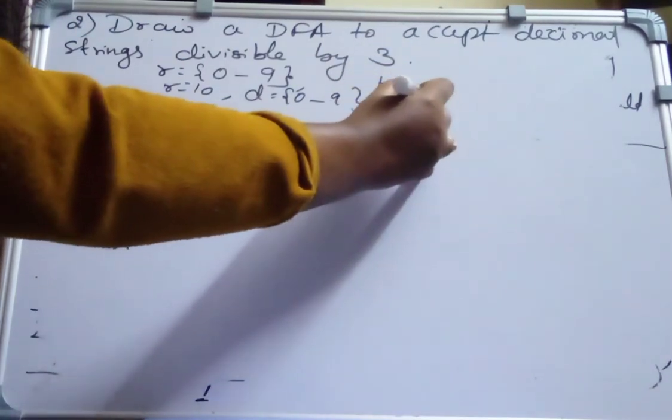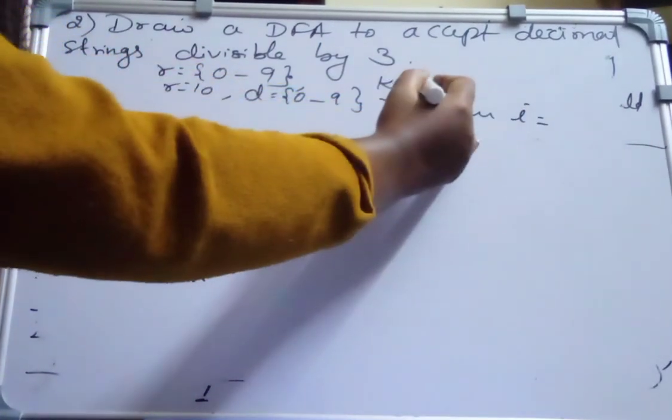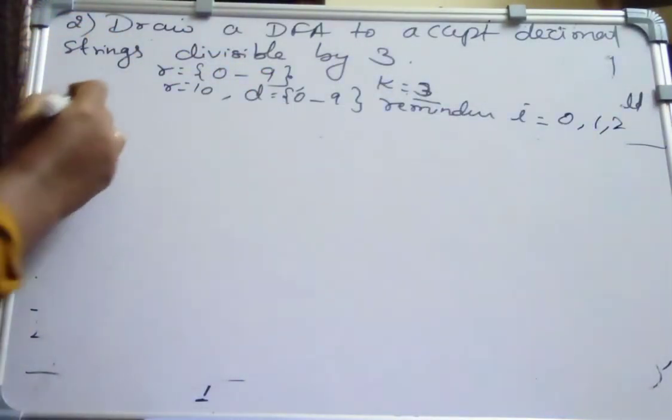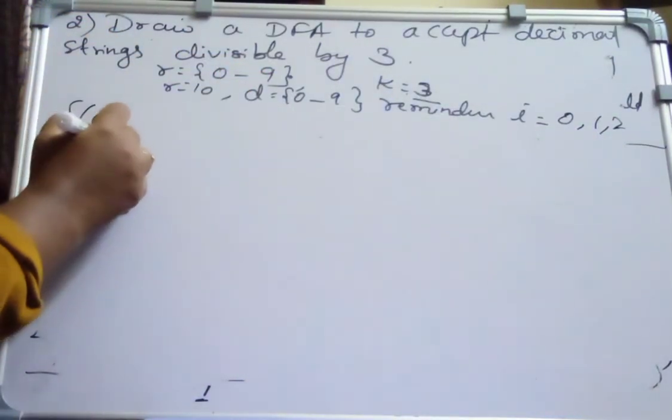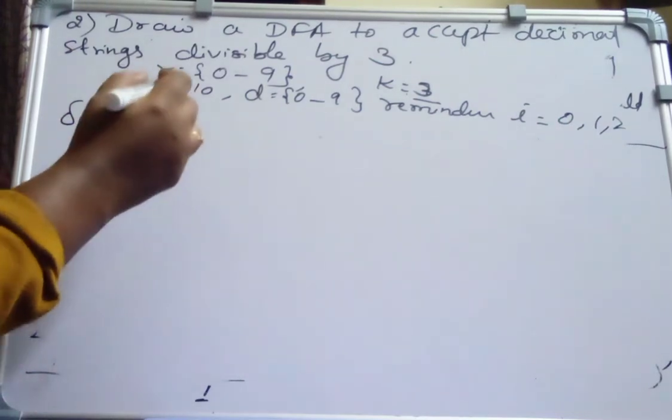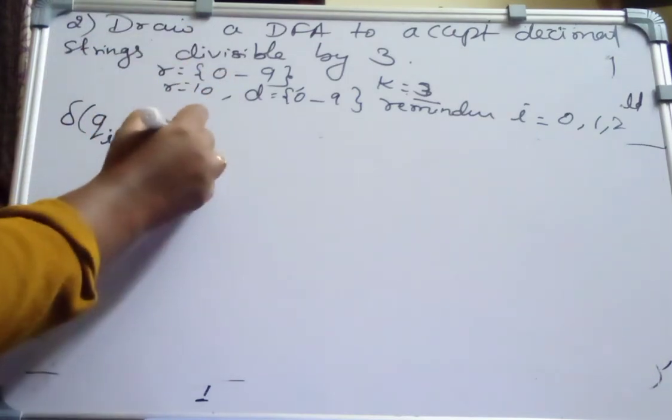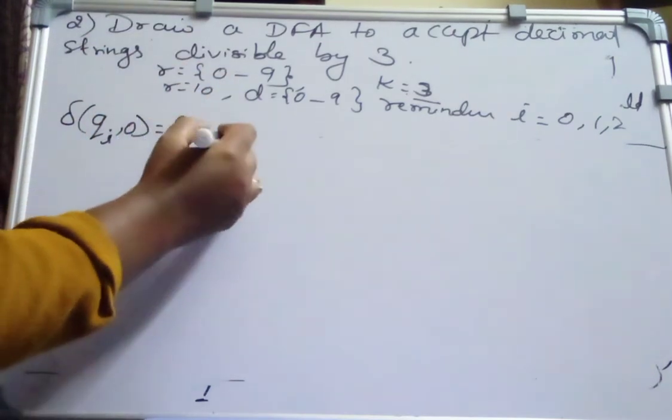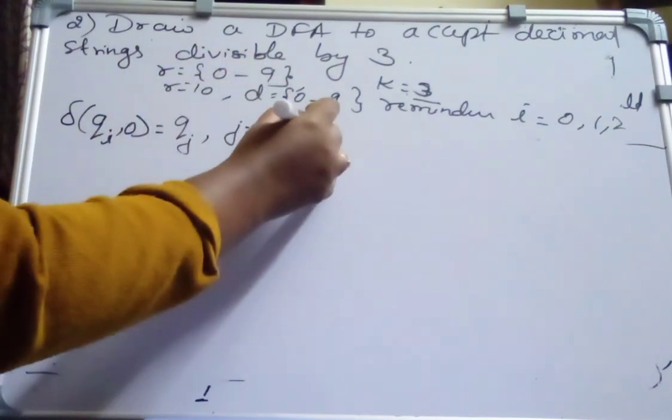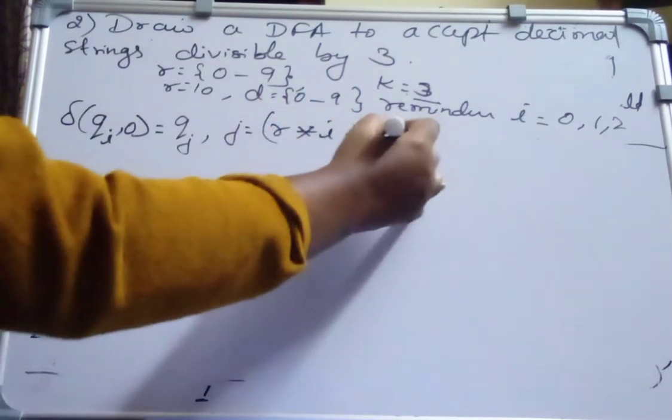Reminders is represented as I. I is equal to possible reminders of 3 are 0, 1 and 2. So I substitute in the formula to find the transition, that is, from the state QI, I is the reminder. On reading D, it moves to some new state. That is, I should find QJ. How to identify QJ here? I should find what is J. J is equal to R into I plus D mod K.